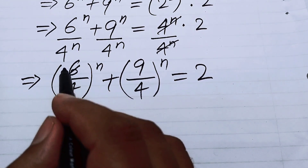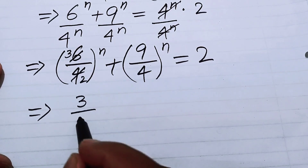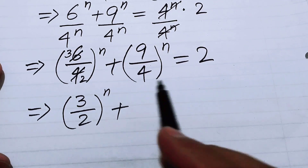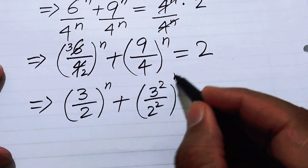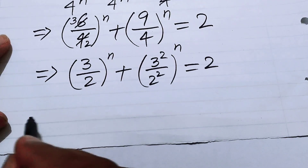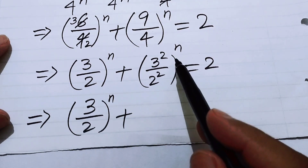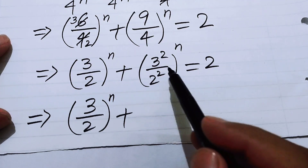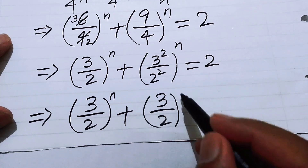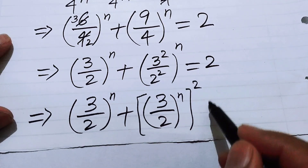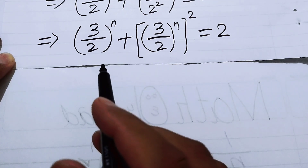We simplify the fractions: 6 over 4 cancels by a factor of 2, giving 3 over 2. And 9 over 4 is written as 3 squared over 2 squared, which is 3 over 2 whole squared. So we have 3 over 2 to the power of n plus 3 over 2 to the power of n, whole squared, equals 2.